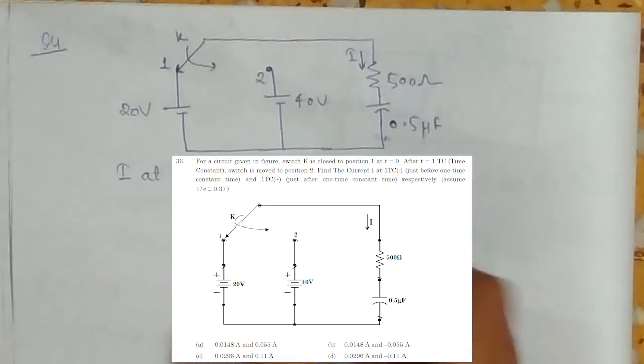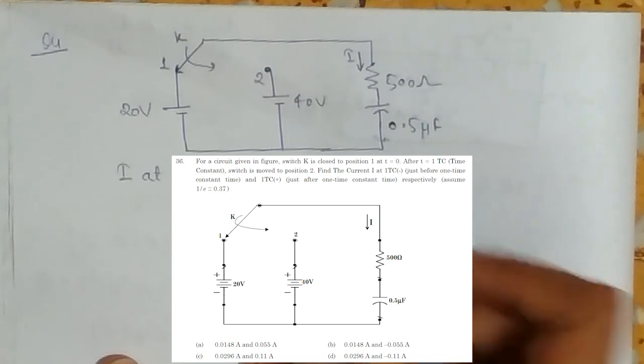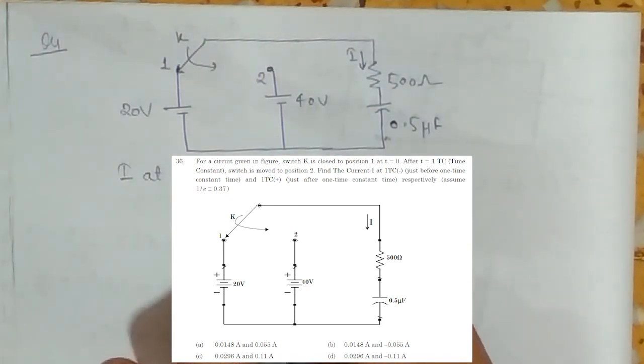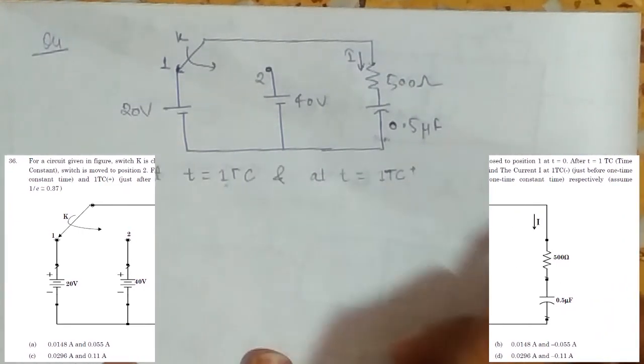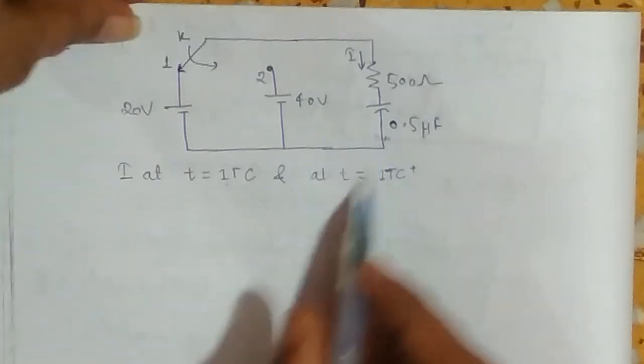This is my position 1 and this is my position 2. After 1 time constant, the switch is moved to position 2. In the question it is given, so we have to find this current i at t equals 1 time constant, before 1 time constant and just after 1 time constant. So here my capacitor is present.